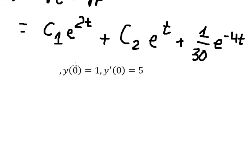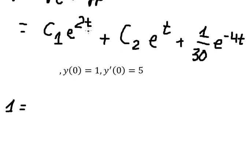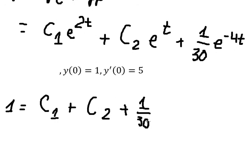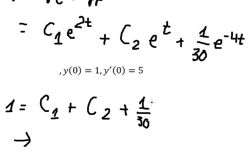Now applying the initial conditions. When t = 0, y = 1. Each exponential e^(0) equals 1. Substituting gives C1 + C2 + 1/30 = 1, so C1 + C2 = 29/30.